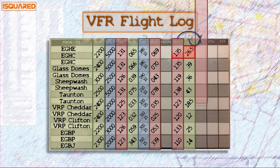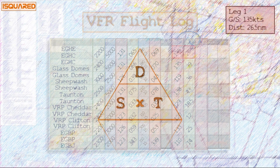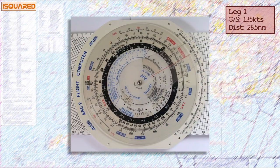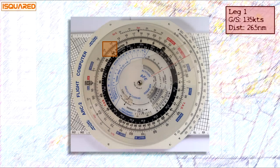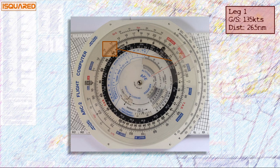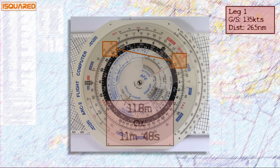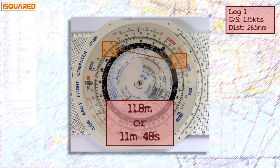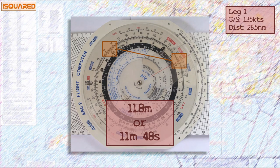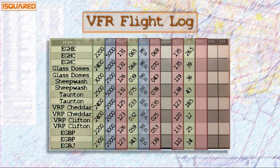Ground speed and distance give us our time with a straightforward speed-distance-time calculation. This is a time-based calculation, so set the time index on the inner wheel against the ground speed on the outer wheel. We know our distance so we find it and read the time underneath. For 26.5 nautical miles at 135 knots, that's about a fifth of an hour — 11.8 minutes or 11 minutes 48 seconds. Add that to the log and work through the remaining legs, making sure to use the true airspeed and distance specific to each leg.